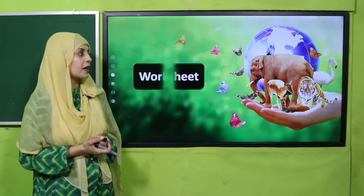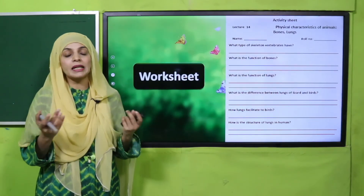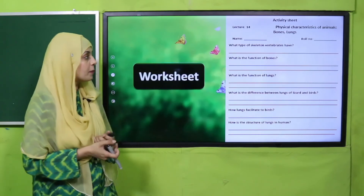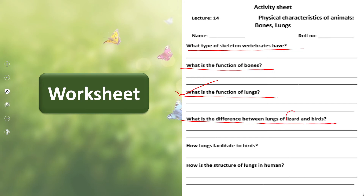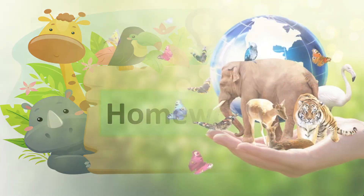Now is the time for practice. You can download this worksheet from the description box below this video, or get it in print form from your teacher. Write down your name and roll number. What type of skeleton do vertebrates have? An internal skeleton called an endoskeleton. What is the function of bones? They provide support to the body. What is the function of lungs? They help in breathing. What is the difference between lungs of lizards and birds? Lizards have larger air spaces; birds have multi-lobed lungs. How do lungs facilitate birds? Multi-lobed lungs help them breathe while flying. What is the structure of lungs in humans? Humans have a well-developed pair of lungs with tiny air sacs for efficient breathing.